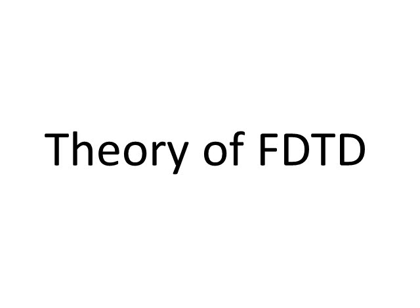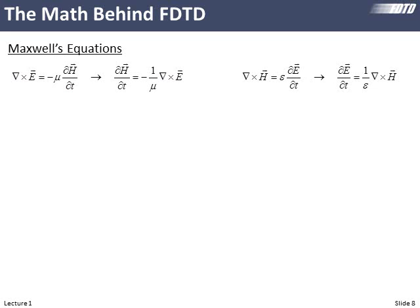On to the theory of finite difference time domain. This all starts with Maxwell's equations, and we'll focus exclusively on the curl equations. Looking at the first curl equation, we can interpret it one of two ways: a time-changing magnetic field at a particular point will induce a curling electric field around it. Likewise, if we induce the encircling electric field, it would induce a change in the magnetic field at the center of that circulation. The other curl equation works the same way — a time-changing electric field induces an encircling magnetic field, and vice versa.